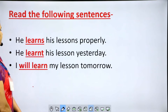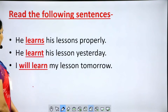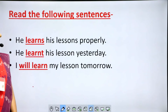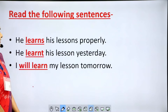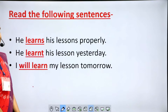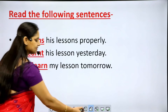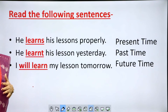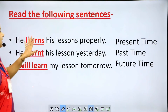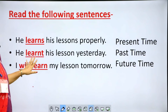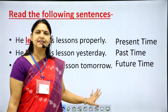Now read the following sentences: 'He learns his lesson properly.' 'He learnt his lesson yesterday.' 'I will learn my lesson tomorrow.' The verbs in these three sentences are 'learns', 'learnt', and 'will learn'. The difference is the time of action. 'Learns' refers to present time. 'Learnt' is used with 'yesterday' and refers to past time. 'Will learn' is used with 'tomorrow' and refers to future time.